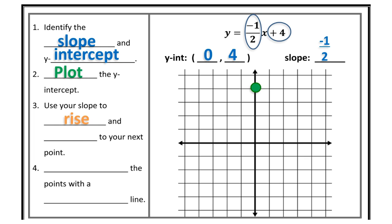Next, I'm going to use the slope to rise and run to the next point. My slope is negative 1 over 2. My rise is negative 1 — rise is up or down; up is positive, down is negative — so I'm going to go down 1. Take time to draw in those little arrows; it helps you keep track of where you are on the coordinate plane. My run is positive 2 — right is positive — so I run 2 to the right, then plot another point.